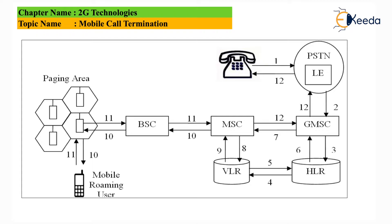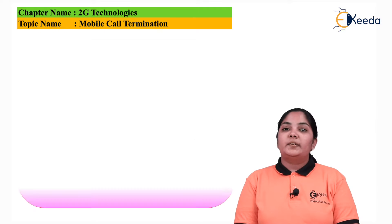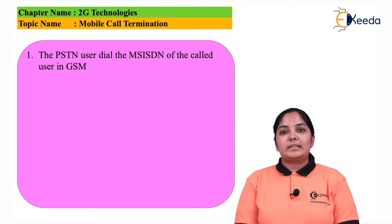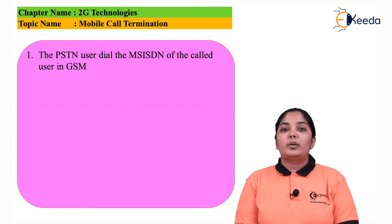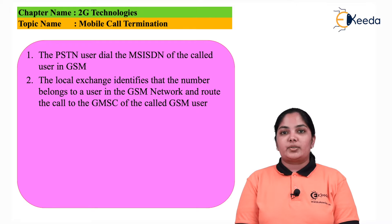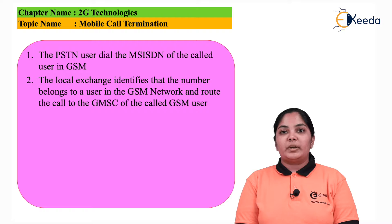The call here is terminated at the mobile station and it is originated at a PSTN network, which stands for Public Switch Telephone Network. The first step: the landline phone dials the MSISDN number of the mobile phone user to the local exchange. The local exchange will forward this information to the GMSC, i.e. the Gateway MSC.